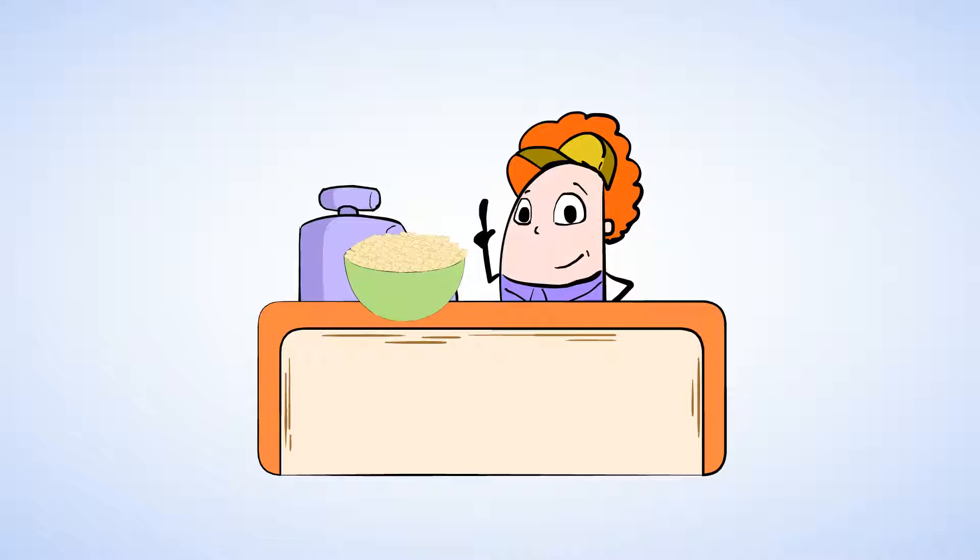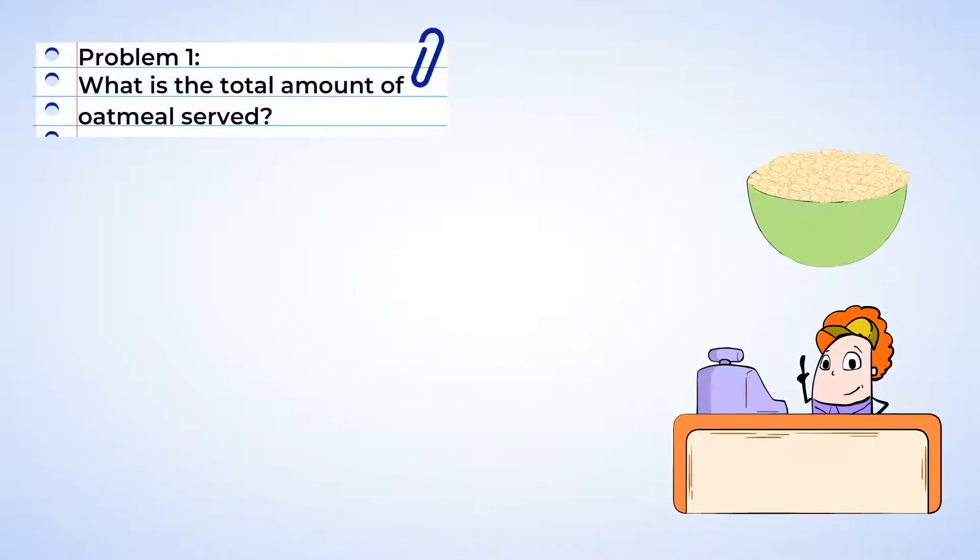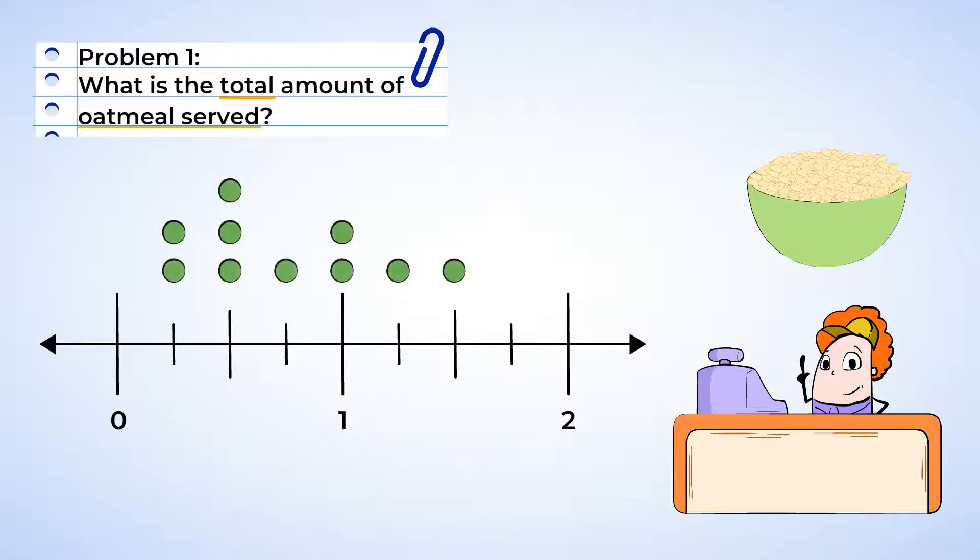Cafeteria is serving oatmeal for today. The workers have recorded the servings in the following line plot. Let's take a look. We need to find the total amount of oatmeal served. We know that the workers in the cafeteria gave out 10 servings of oatmeal in total because there are 10 dots, and each dot represents a serving of oatmeal.